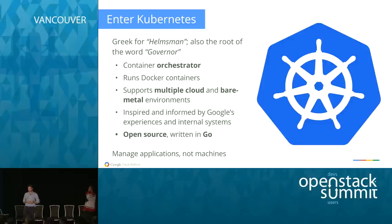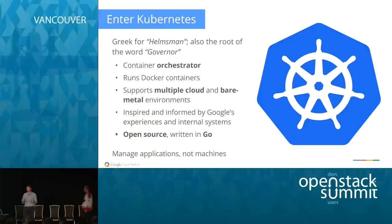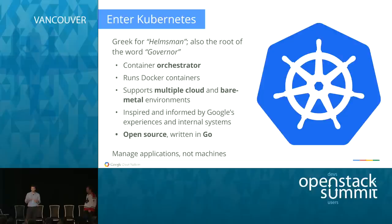The Greek word for helmsman is also the root of the word 'governor.' Container orchestration — Kubernetes runs Docker containers. We recently announced early support for Rocket containers as well. We want to provide choice: any container runtime that the community wants to contribute, we want to make it run in Kubernetes. Multi-cloud, bare metal configurations, inspired by our internal infrastructure, written in Go. Really, what it comes down to is we want you to manage your applications, not the machines — that's where Kubernetes's value really comes in.